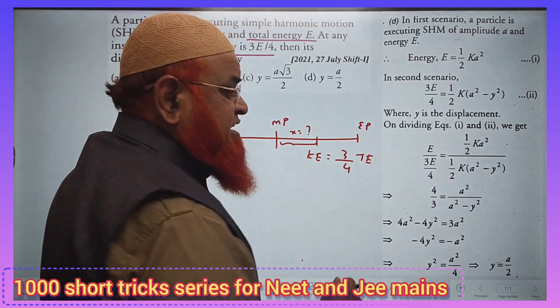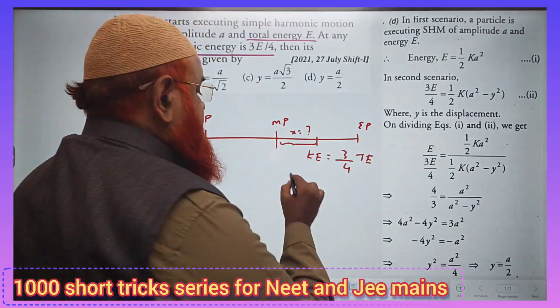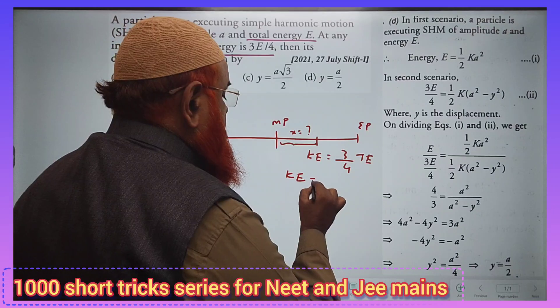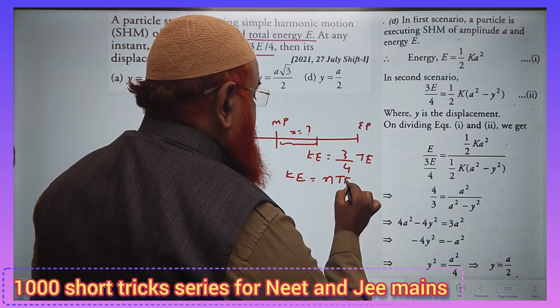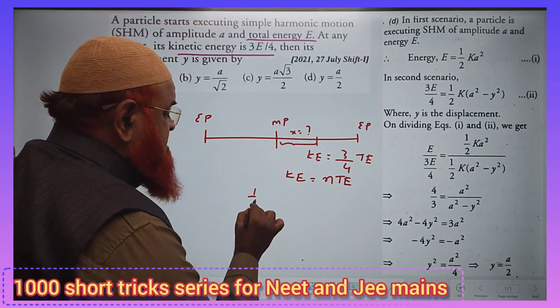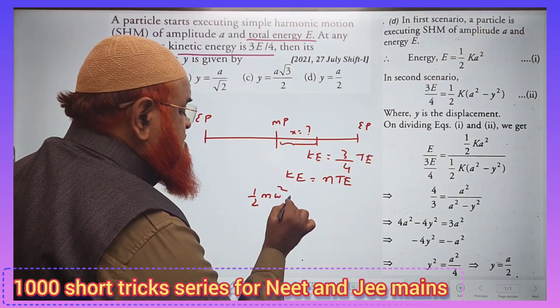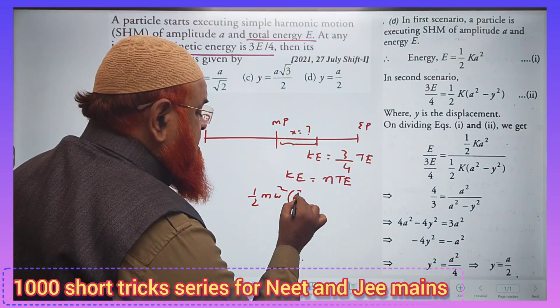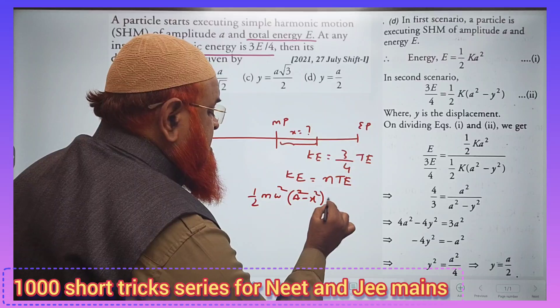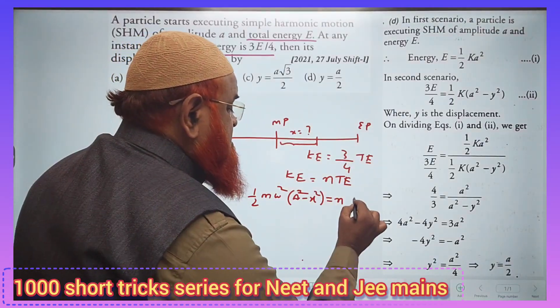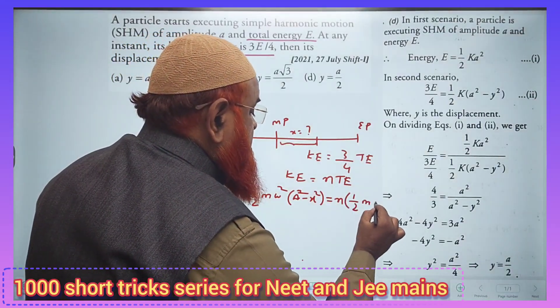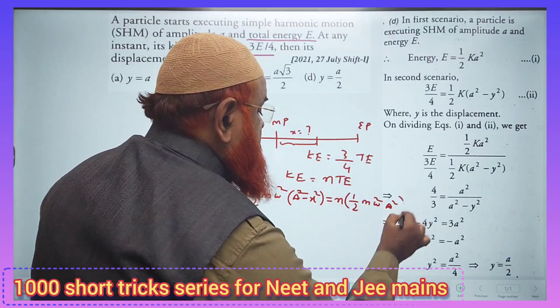Instead of taking 3 by 4, I will take a general term like kinetic energy is equal to n times of the total energy. And you know the formula for kinetic energy is half m omega square a square minus x square is equal to n times of the total energy which is nothing but half m omega square a square.